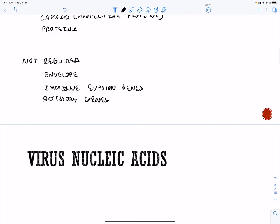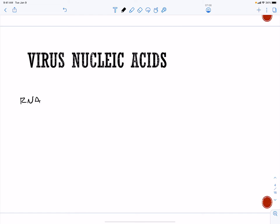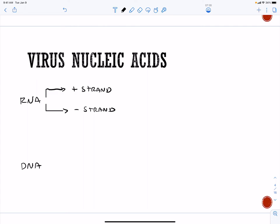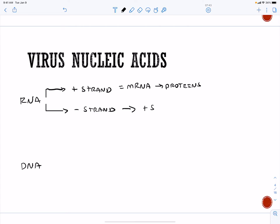With respect to nucleic acids, we're going to have RNA viruses and DNA viruses. The RNA viruses can be a positive strand virus or a negative strand virus. The positive strand virus is equal to messenger RNA, so it can become proteins directly. The negative strand virus has to become positive strand first, and then that equals messenger RNA, and then you get proteins. This step requires a virus enzyme — a polymerase.